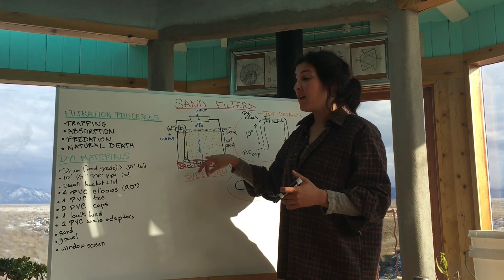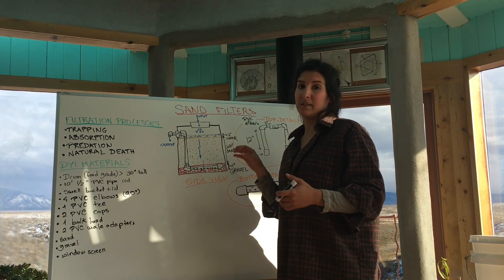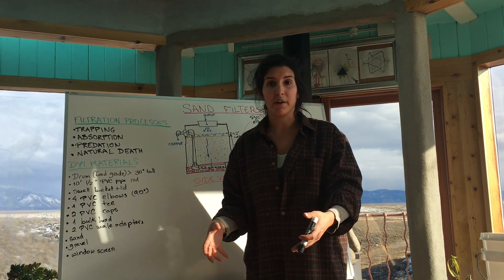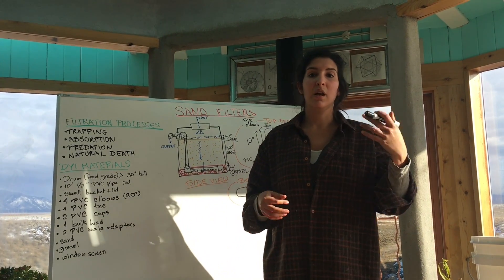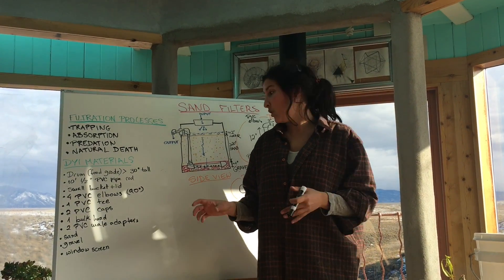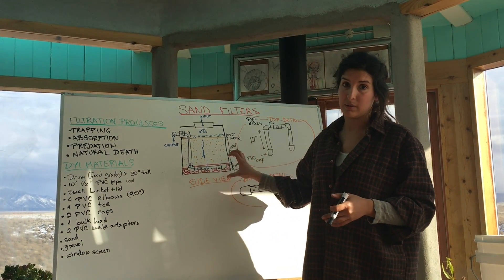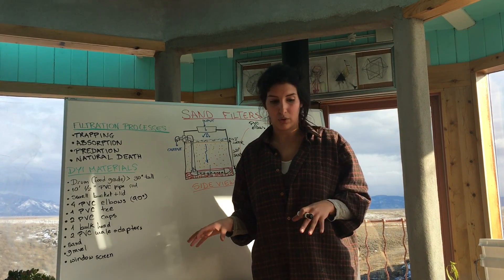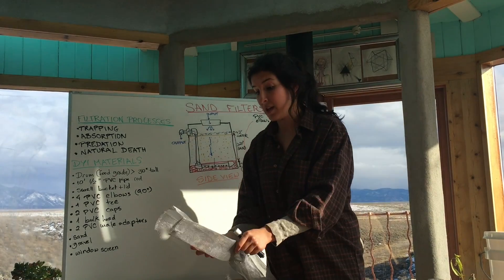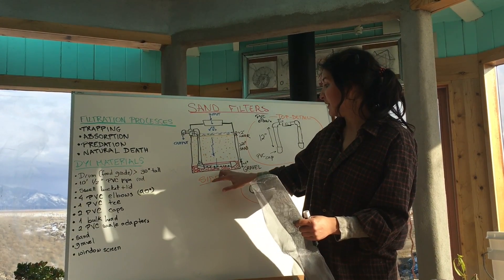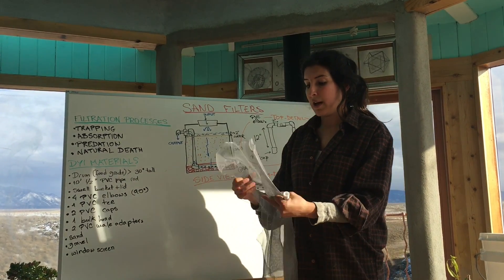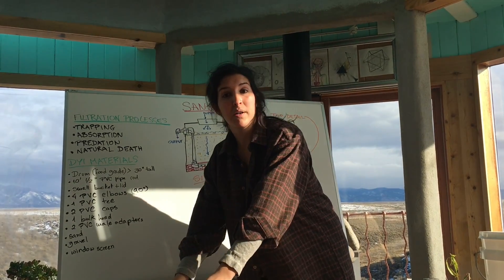Once you have all of that together, the next steps are: cleaning the gravel, preparing the window screen, and cleaning the sand. Clean the gravel by dumping it in water and replacing the water until it runs clear. You only need about 1 inch thickness of gravel. Then cut a piece of window screen to size to prevent sand from leaking into the pores between the gravel, and place it on top of the gravel.